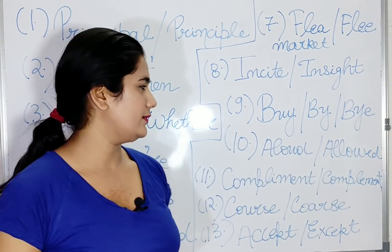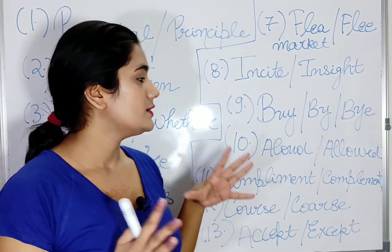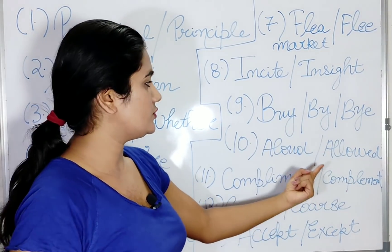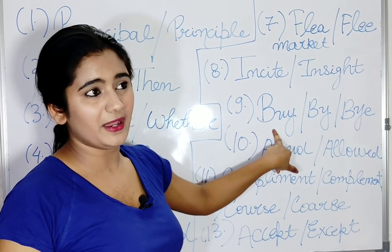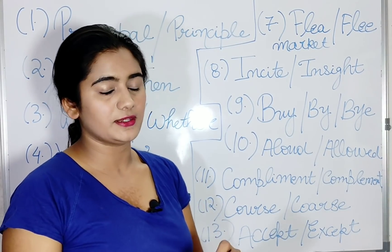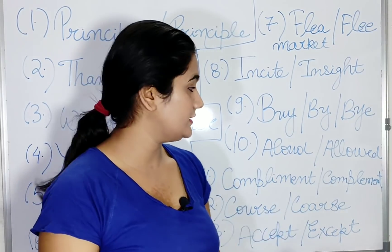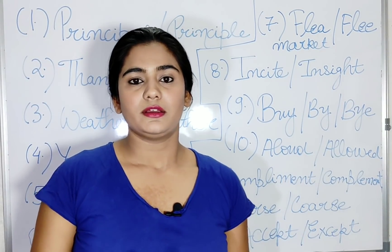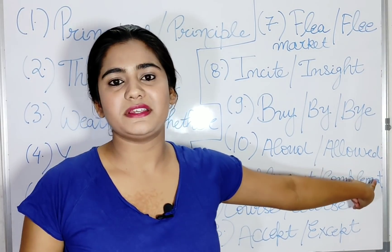Next is 'buy', 'by', and 'bye.' These are very common and I've included them because they cause confusion. 'Buy', B-U-Y, means to purchase something. 'By' means alongside or near something — 'this marker is bought by me.' 'Bye' is used to say goodbye. Next is 'aloud' and 'allowed.' Aloud means to make a sound louder — to speak in a loud voice or increase the volume of music. Allowed means to give permission for something.